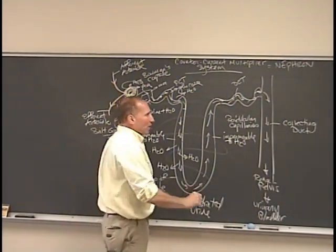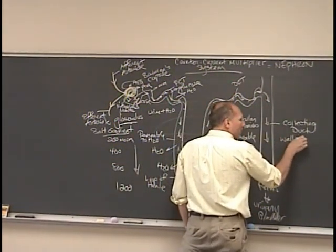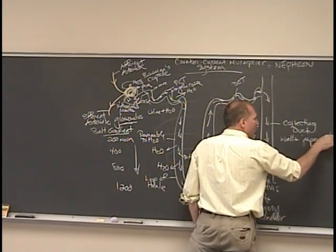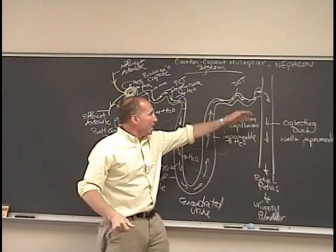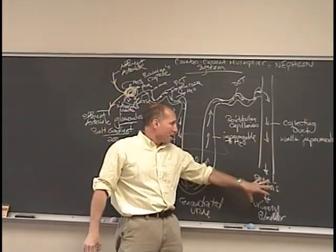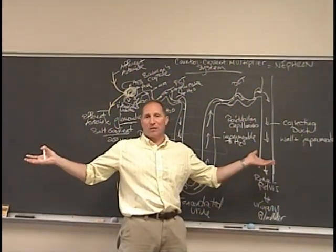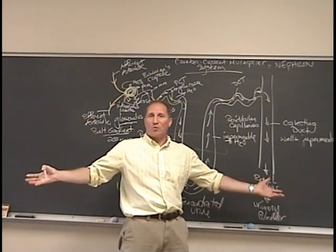Now, what's interesting about the collecting duct is that the walls are normally impermeable to water. So normally, the filtrate will just go straight through the collecting duct to the renal pelvis, out the urinary bladder, and then eventually out into the urethra. In other words, that's the waste products, the fluids that we end up taking out of our system.